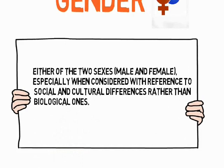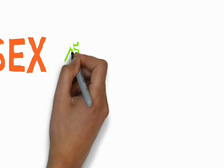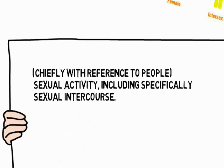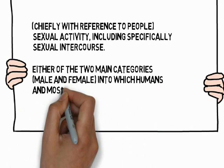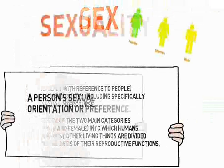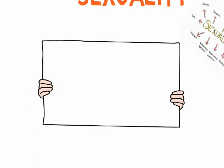The Oxford Dictionary has two main definitions regarding sex. The first one says, chiefly with reference to people, sexual activity, including specifically sexual intercourse. However, the second one makes reference to a different thing: either of the two main categories, male and female, into which humans and most other living things are divided on the basis of their reproductive functions.